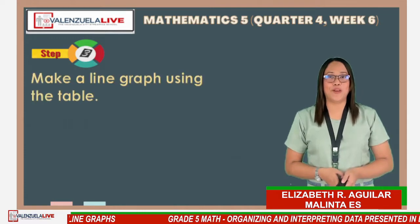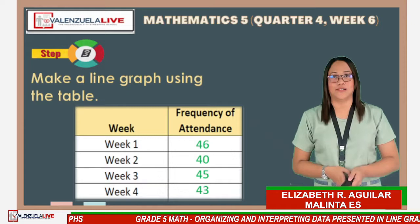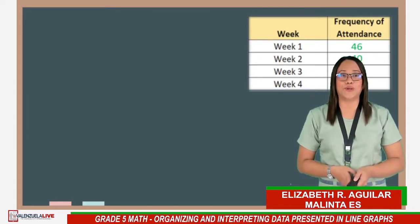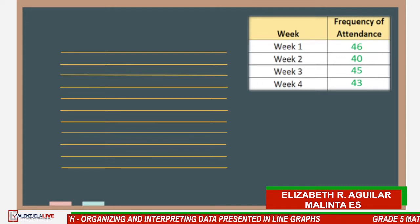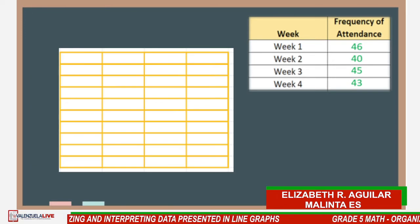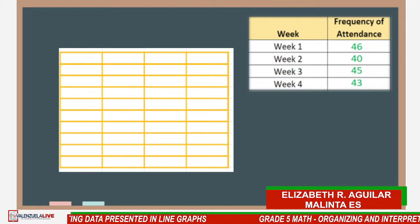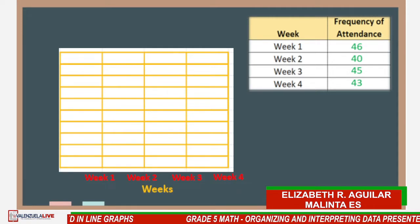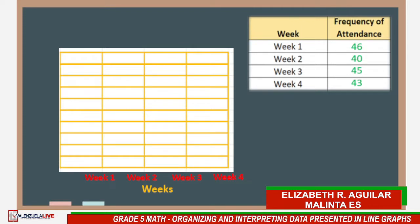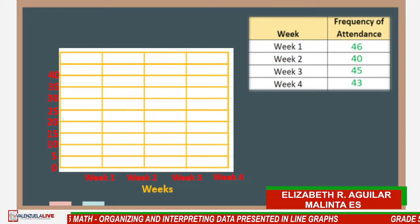For Step 3, we make a line graph using that table. First, draw the x-axis (horizontal line) and the y-axis (vertical line) to make a grid. Then, put the information on the x-axis: Week 1, Week 2, Week 3, and Week 4, labeled as 'Weeks.' For the y-axis, write the scale using multiples of 5: 0, 5, 10, 15, 20, 25, 30, 35, 40, 45, 50 — labeled as 'Attendance.'